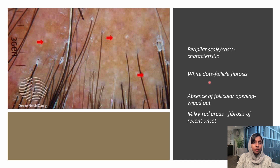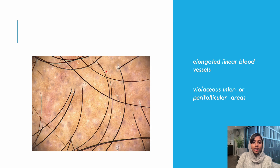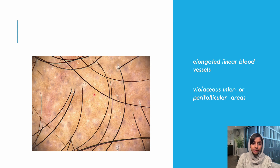You can see the white dots indicating fibrosis. In advanced cases, there will be absence of the hair follicle, indicating cicatricial alopecia. The milky red areas indicate an early phase of fibrosis. Other features include elongated linear blood vessels and violaceous inter- and perifollicular areas.